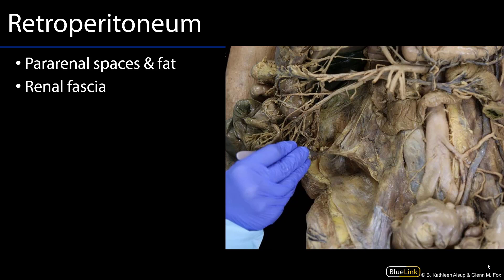In particular, with respect to this session, we'll show you the anterior and posterior pararenal spaces, as well as the perirenal space. The pararenal spaces are the regions of the retroperitoneum which are found superficial to the renal fascia.